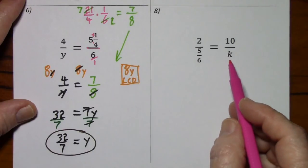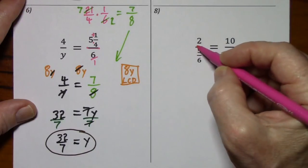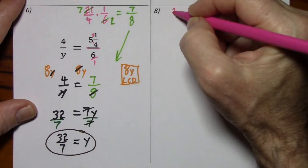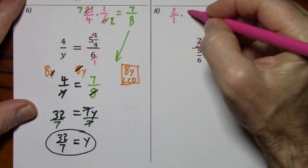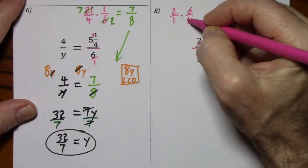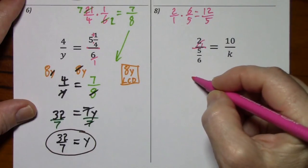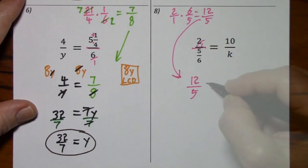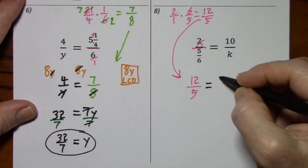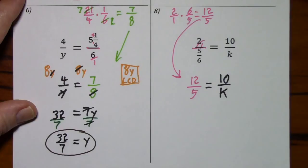Looking at our last one. Variables in the denominator. This side's kind of a mess, so I think I'll just clean it up real quick. 2 over 1 divided by 5 sixths means times 6 fifths. So what do we get? 12 fifths. I'm just bringing this down here. This equal to 10 over k. I'm just bringing that down. We want to get this out of here, so we're just going to clear it of fractions.